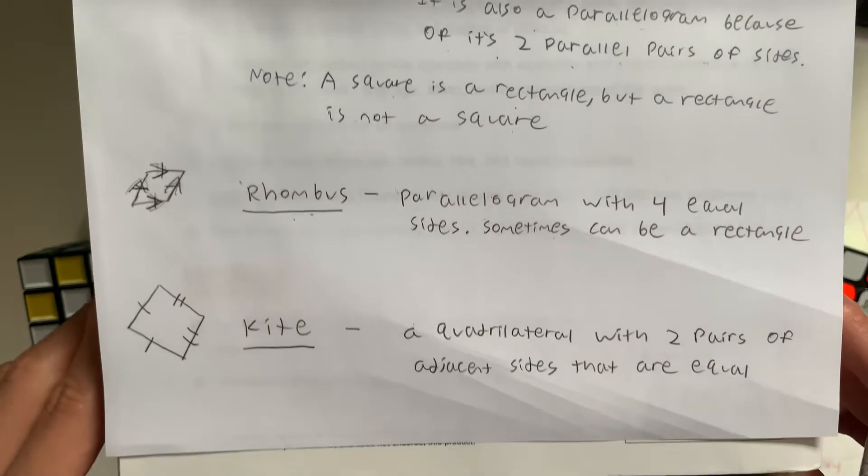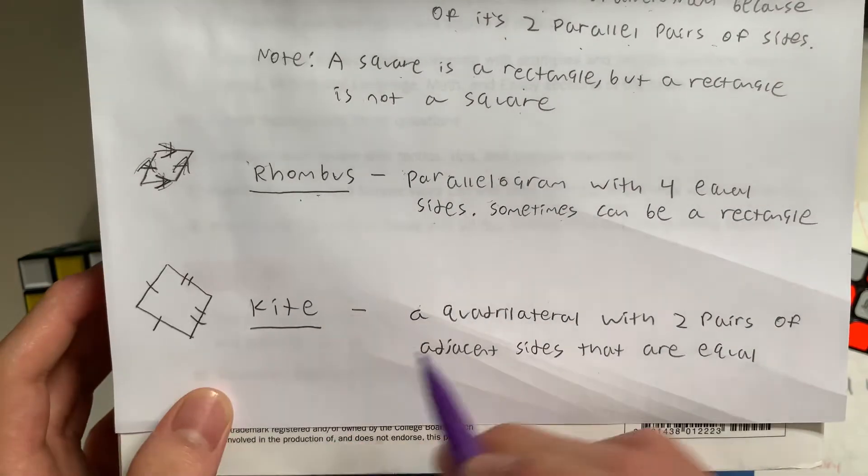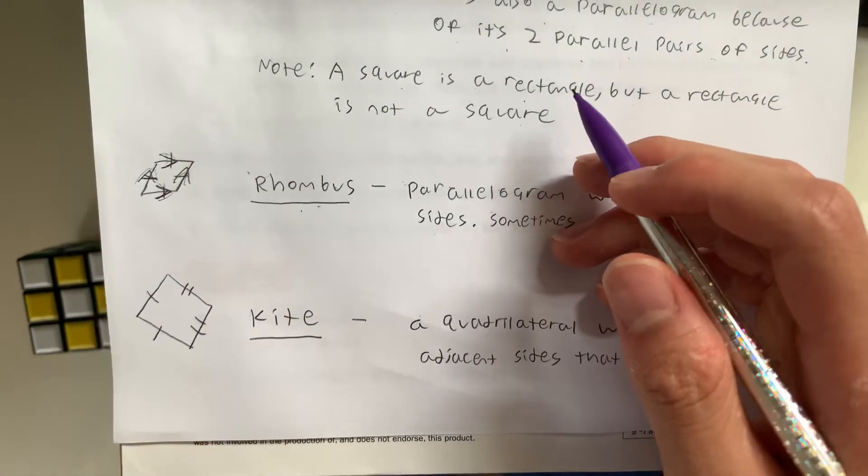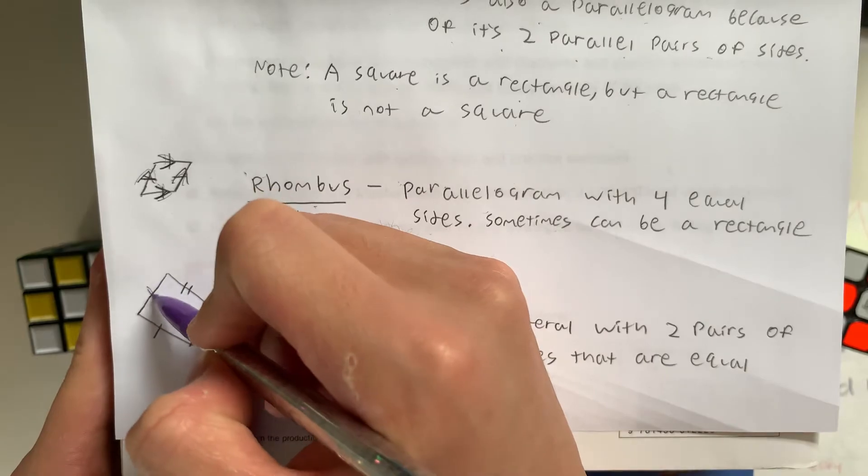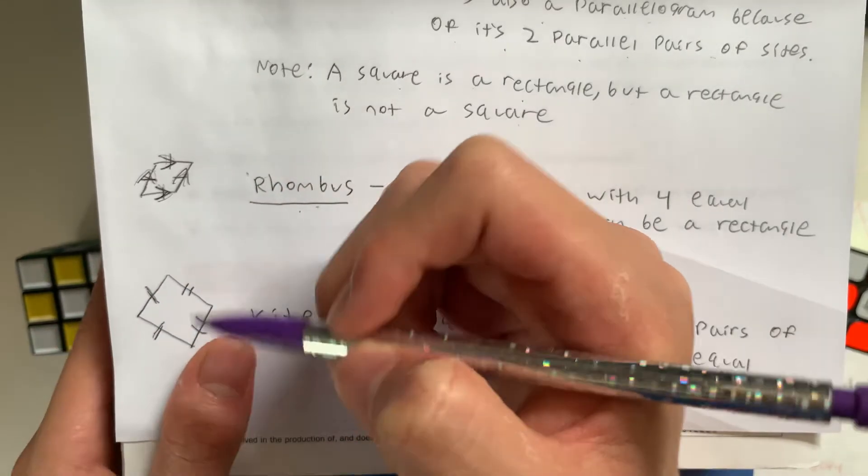Lastly, we have a kite. A kite is probably the least important quadrilateral out of all five because normally on geometry regents or geometry tests, you won't see a kite, but it's better to know it anyway. A kite is a quadrilateral with two pairs of adjacent sides that are equal. This means that the sides right next to each other have to be equal or else it's not a kite.